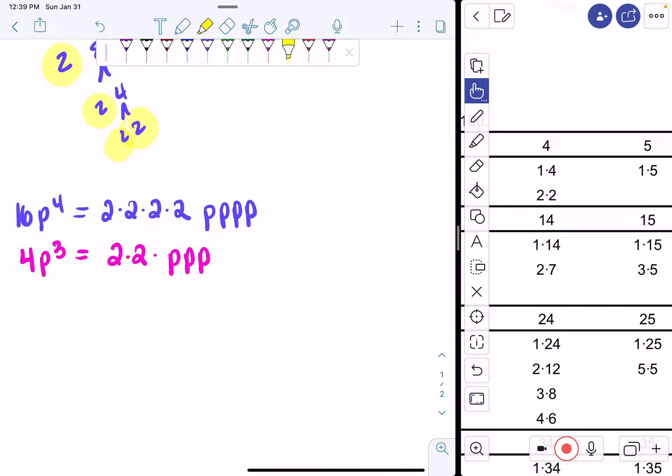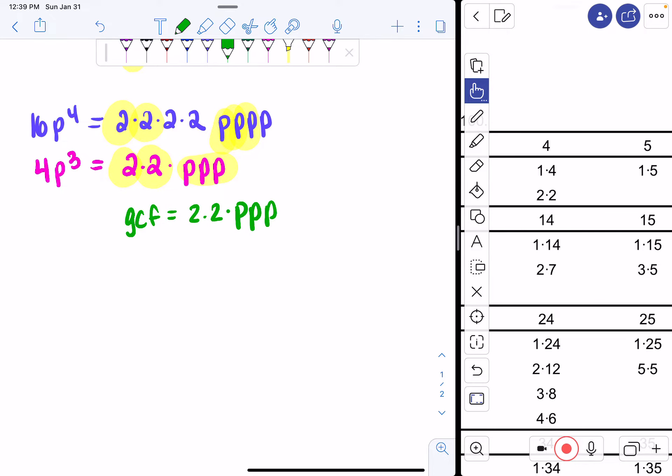Now we have to ask ourselves, what is in common to both rows? If you look, I have 1, 2, 2 2s in common, and I have 3 p's. So I can say my GCF is 2 times 2, and then 3 p's, 1, 2, 3. So my GCF is 4p cubed.